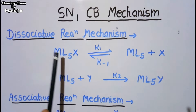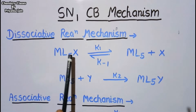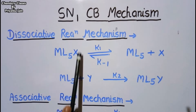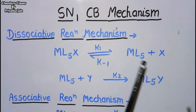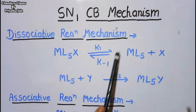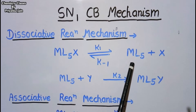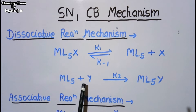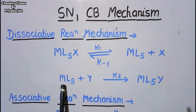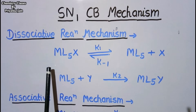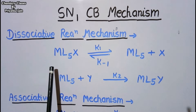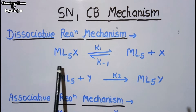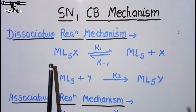In the dissociative nucleophilic substitution reaction, the complex will firstly dissociate — the migrating group will firstly migrate and form an activated complex. In the next step, the nucleophile will attack on this complex and form the product. So in the dissociative reaction mechanism, it proceeds by a first order reaction mechanism.